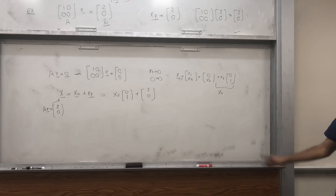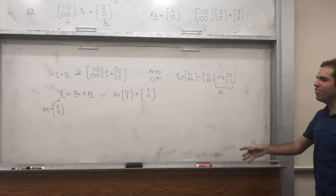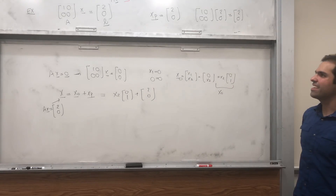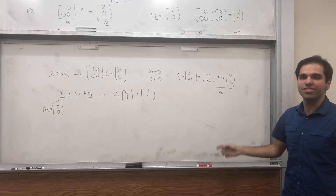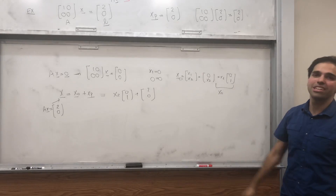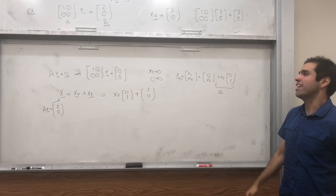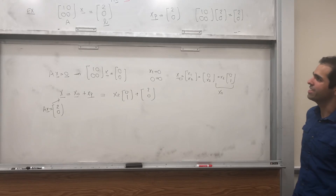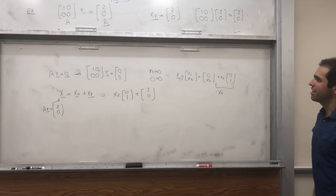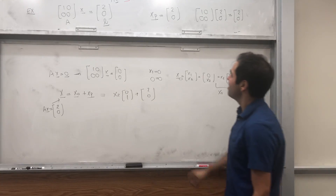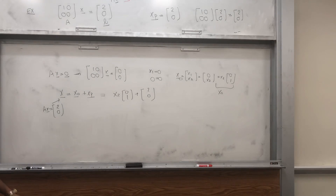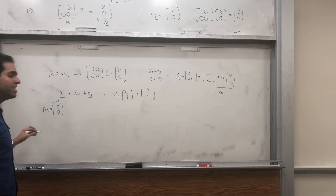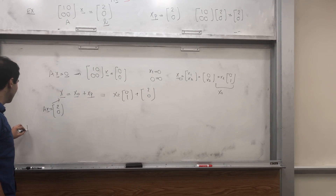So it's a nice way of solving Ax equals b. You might say this is silly because we can already solve Ax equals b directly, which is true. But as I said, this is more useful in theory. Before I continue, let me prove this.